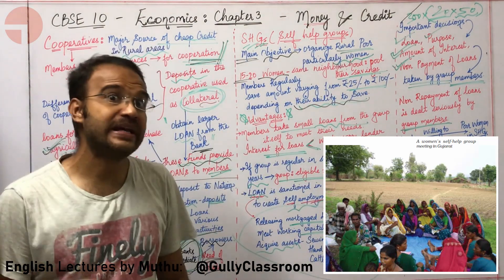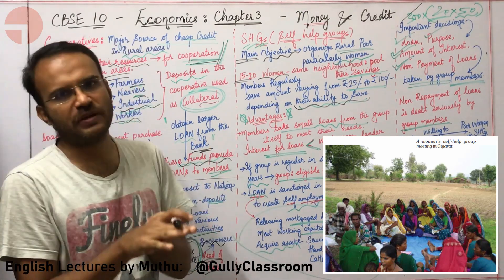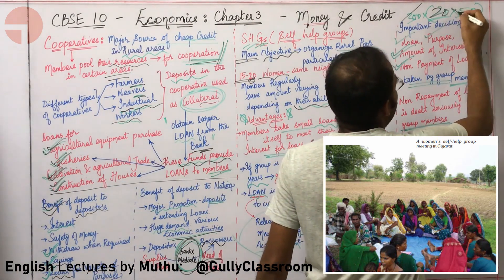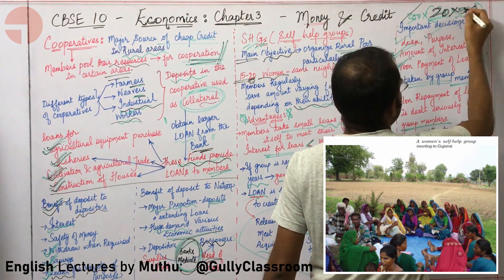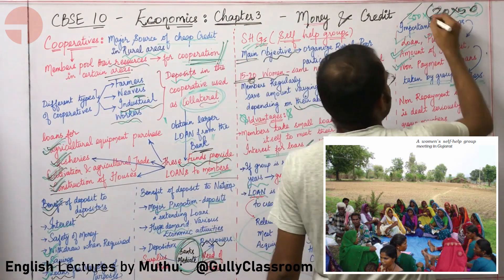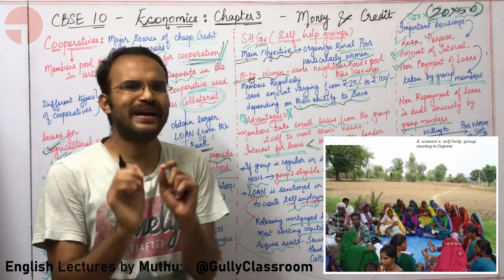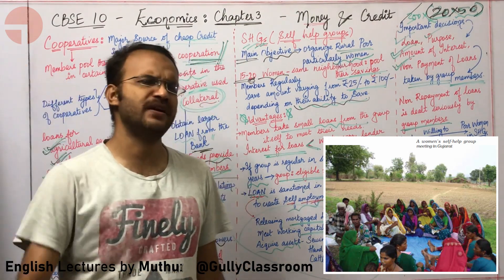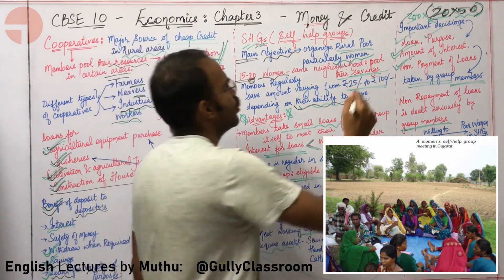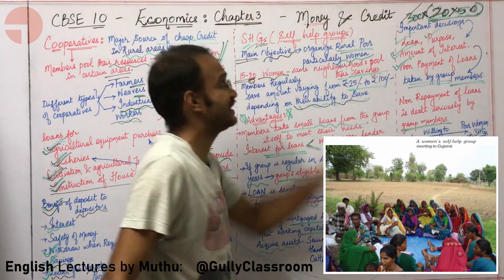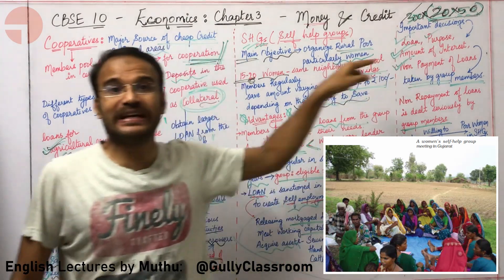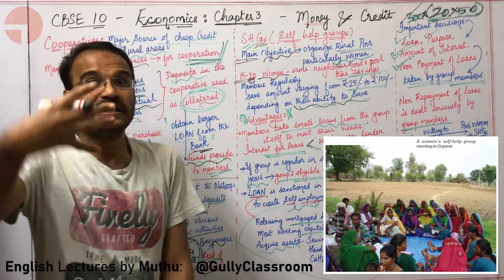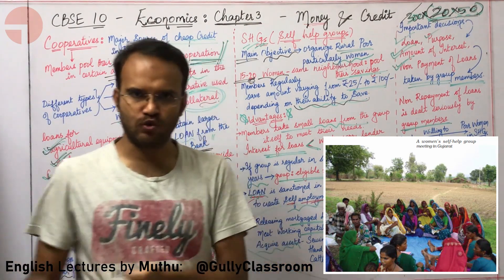To put this in perspective: 20 women saving 50 rupees per day means the group saves 1,000 rupees per day. Over 300 saving days in a year, the group accumulates 3 lakh rupees — a significant amount. This 3 lakh rupees can be used to give loans to the women for their own purposes.